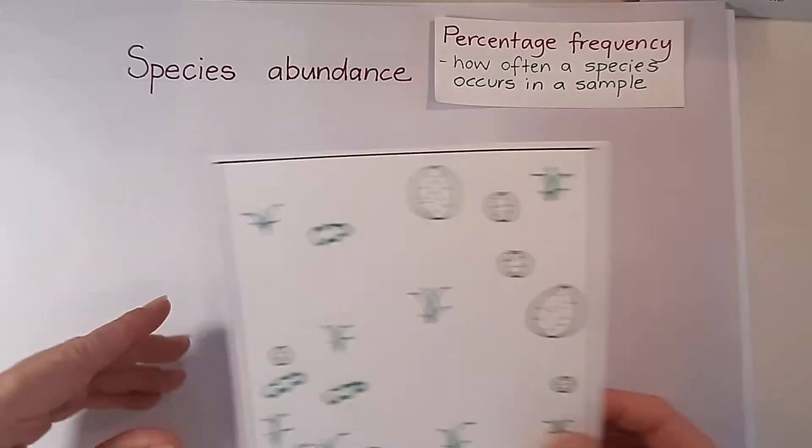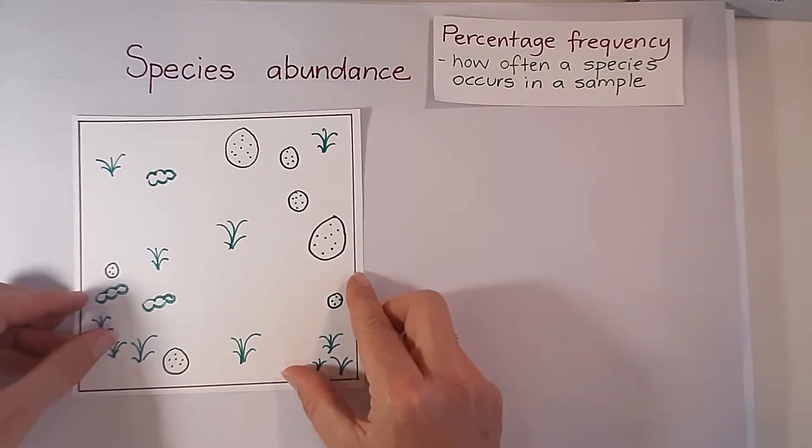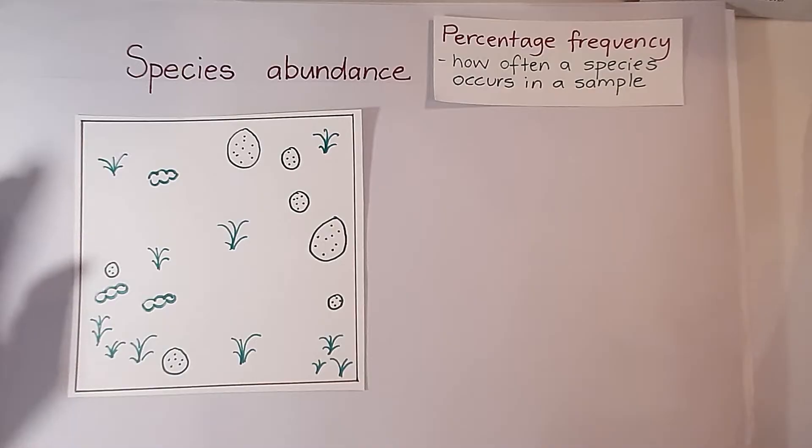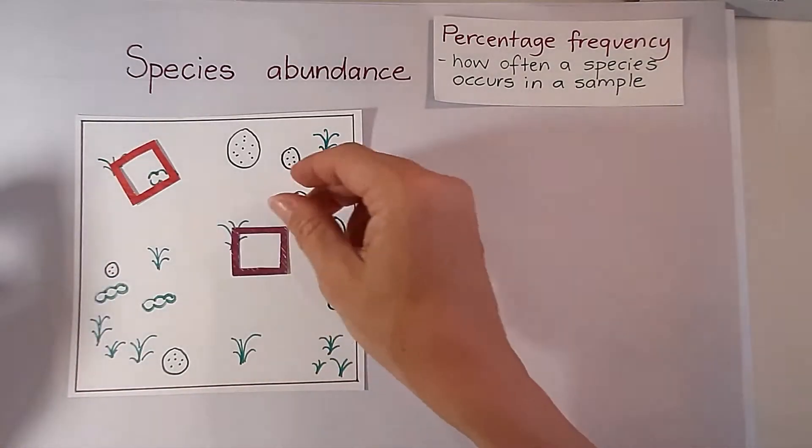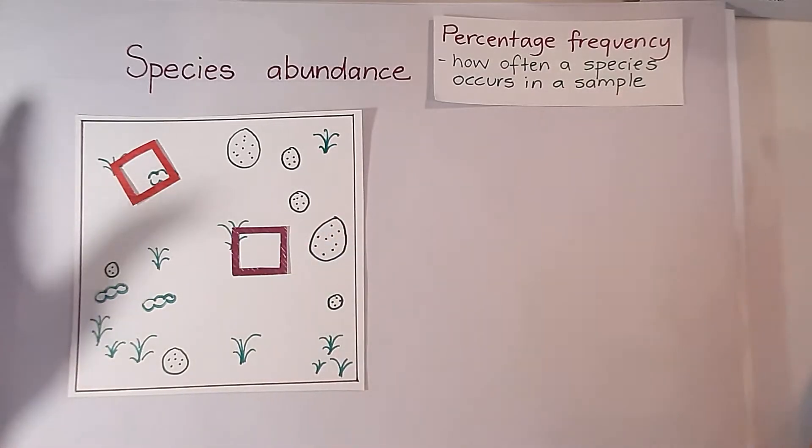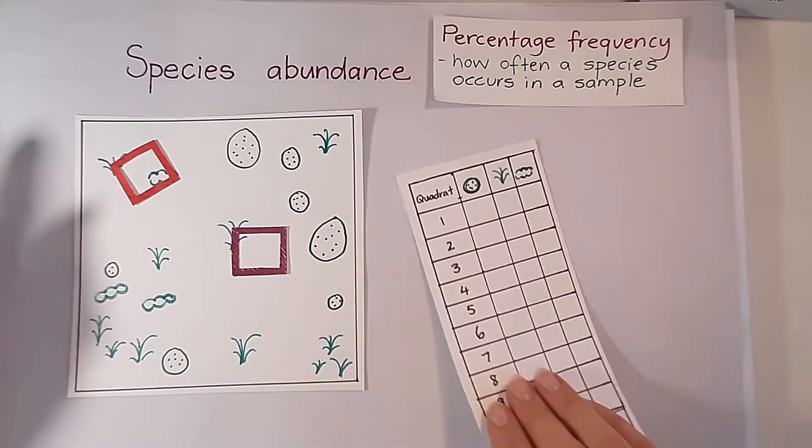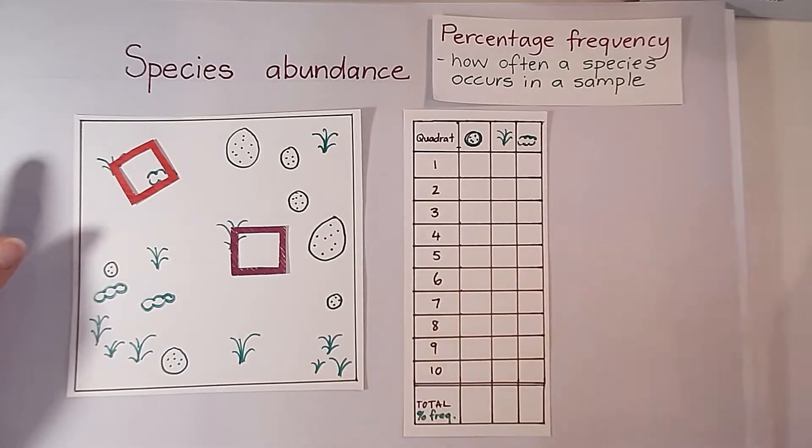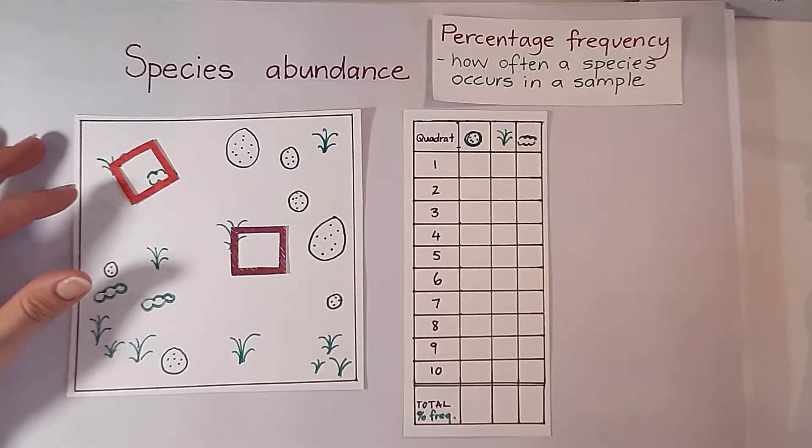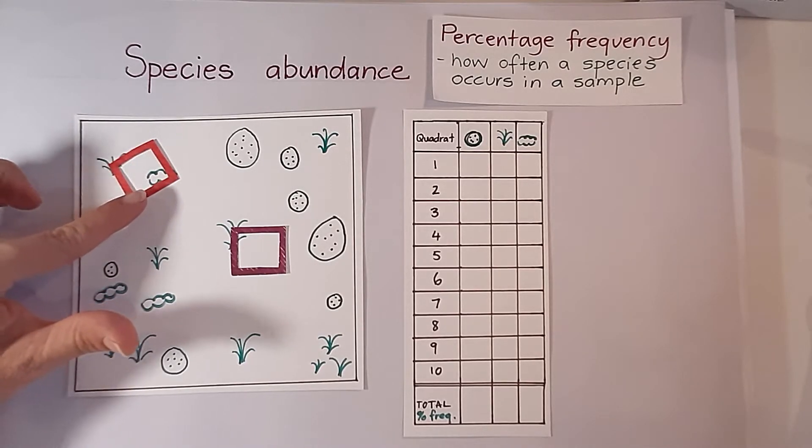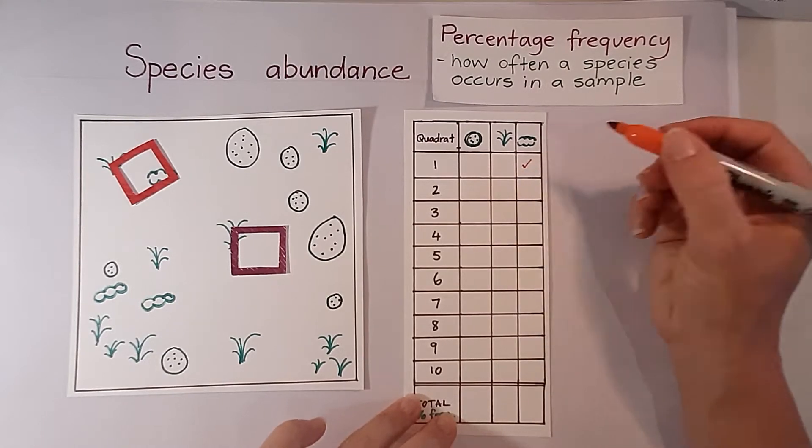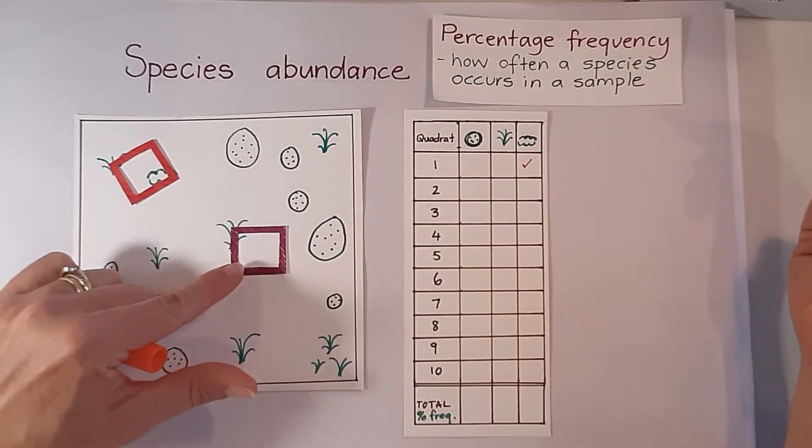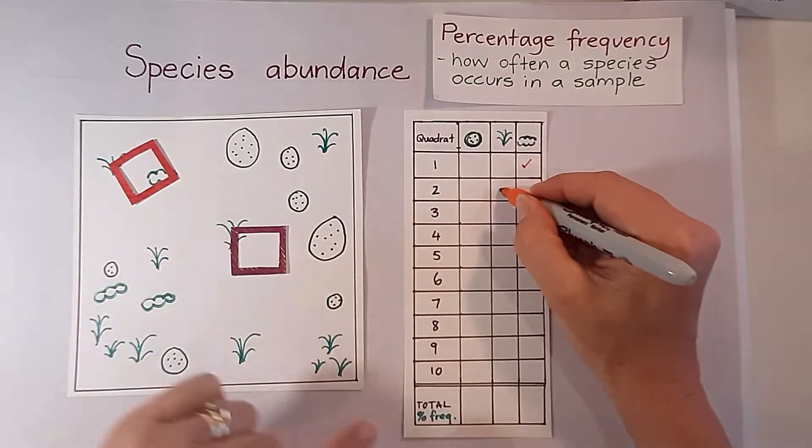If we were to take an environment, we could sample this environment using quadrats. If we were to throw the quadrats out, we could record in a data table how often we observed a particular species in one of our quadrats. So in this quadrat we can see that we only observed the bush sample, and in this quadrat we did have a small bit of this one.